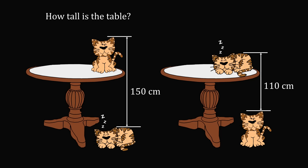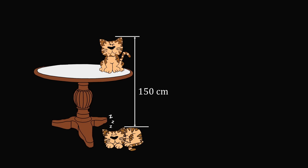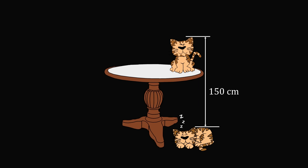At first glance, this problem seems quite impossible. How can you figure out the height of the table from the distances given? You don't know the height of the sitting cat or the height of the sleeping cat. Let's go through it step by step, focusing on the left diagram. We wish to solve for the height of the table — let's denote this unknown quantity by the variable t, measured from the floor.